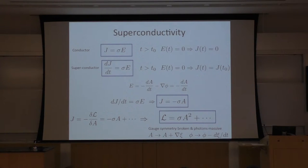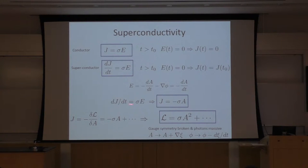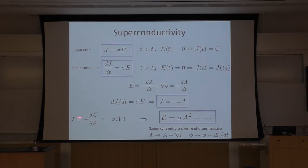There is no electric field, no battery connected to the system, but I still have current. We know that the electric field is related to the vector potential and scalar potential. We can pick a gauge such that the scalar potential is zero, so the electric field is minus dA/dt. Plugging this in: dJ/dt equals sigma·E equals minus sigma·dA/dt. Therefore, J is proportional to A. So for conductors, J is proportional to E; but for superconductors, J is proportional to A.